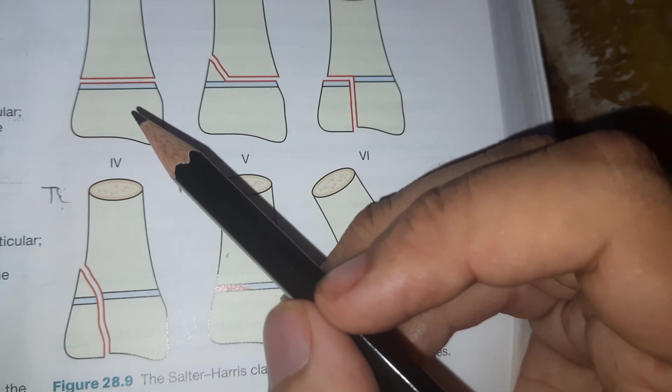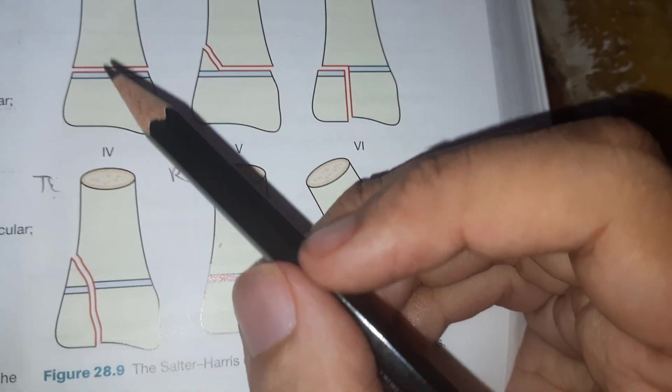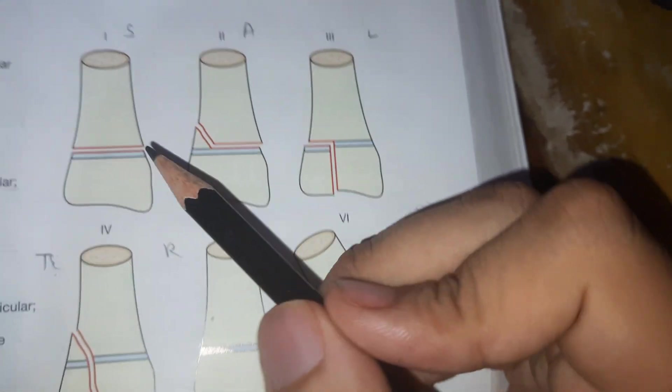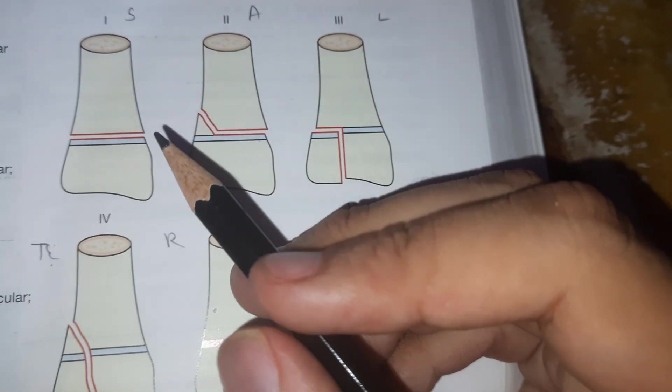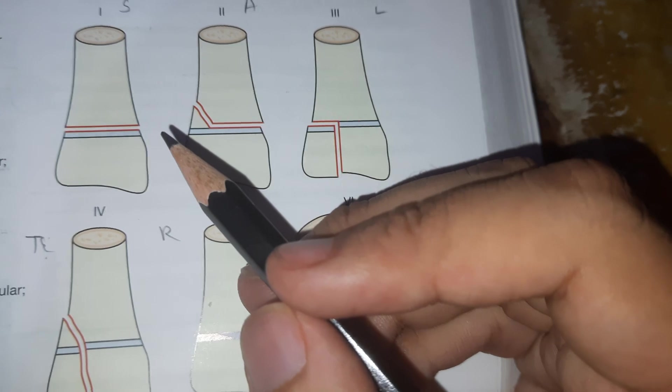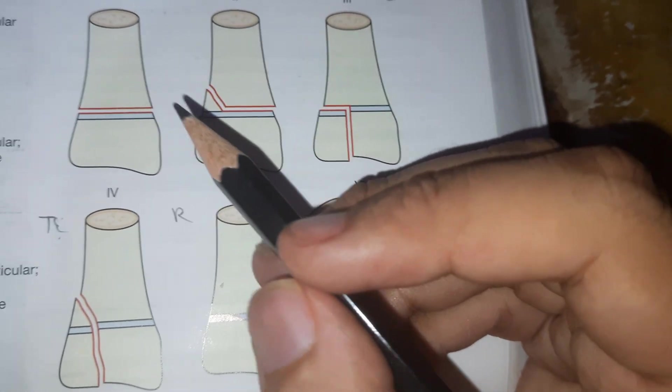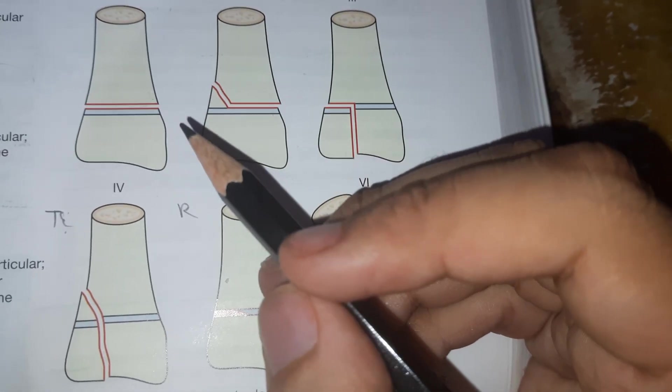There is complete separation of epiphysis from the metaphysis. This type of injury is seen in slipped capital femoral epiphysis (SCFE), and it has the best prognosis. This doesn't affect the growth of children.